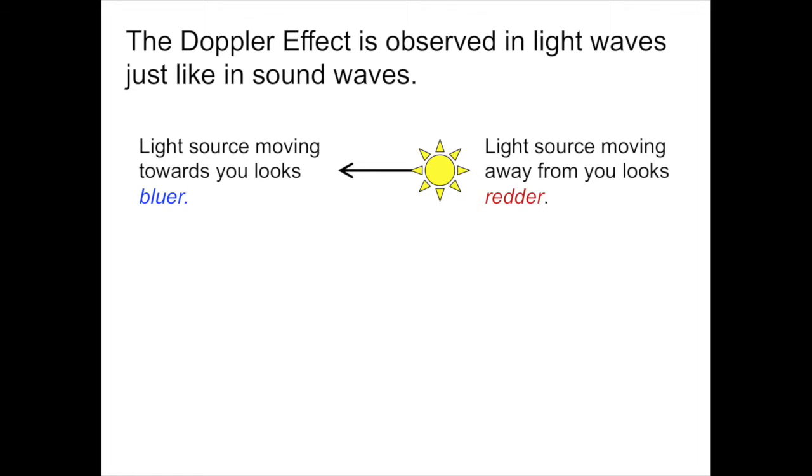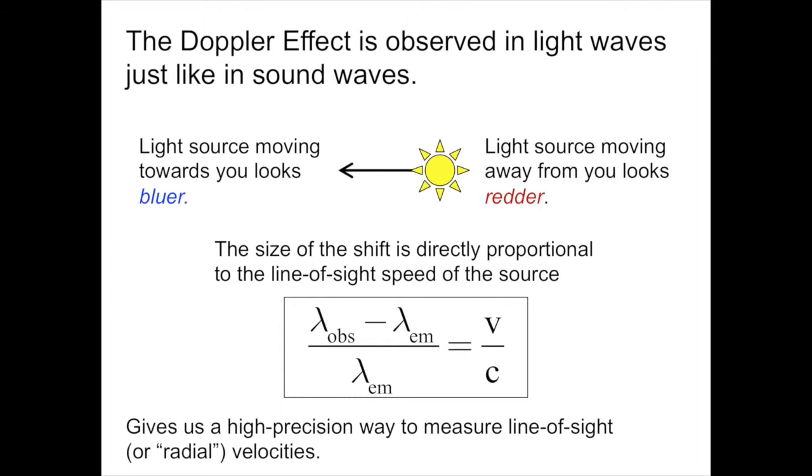We don't always measure this with the eye. We also measure this with devices called spectrometers that make precision measurements of the wavelength of light. The size of the shift of wavelength, and we're going to use wavelength because I'm an optical spectroscopist and that's what we do, the size of the shift is proportional to the line of sight velocity of the source.